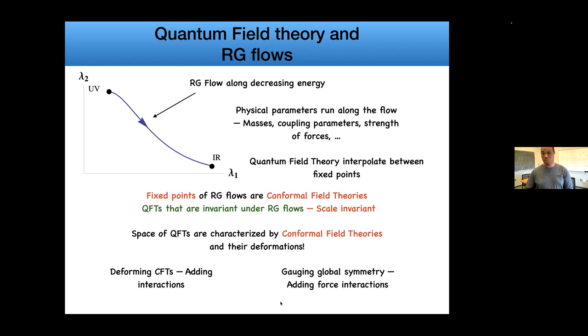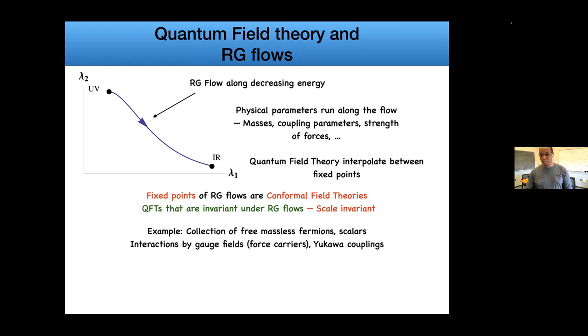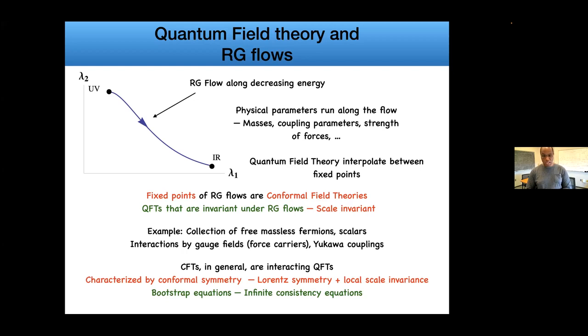When you want to understand QFTs, you want to characterize the neighborhood of this point and the UV point. Simple examples we all know in the Lagrangian setup: if we take free massless fermions and scalars, you can treat them as CFTs. Interactions and gauge fields with various Yukawa couplings provide the structure.